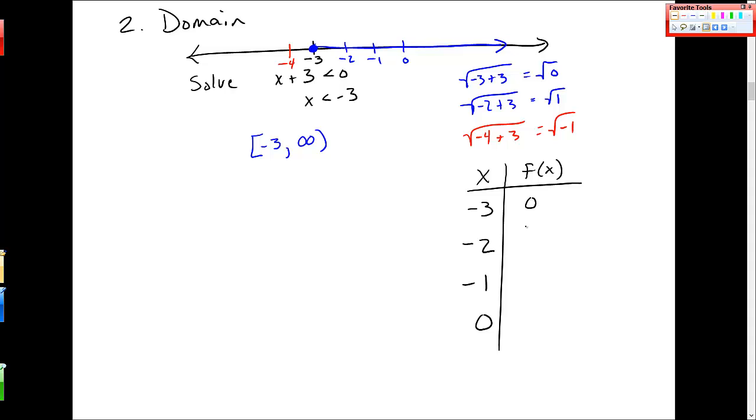I've plugged in some of these, so at negative 3, it's 0. At negative 2, it's the square root of 1, which is 1. At negative 1, I get square root of negative 1 plus 3, which is square root of 2, which is about 1.21 something. When I plug in 0, 0 plus 3 square root of 3, and I just plug that into my calculator, I get about 1.73.